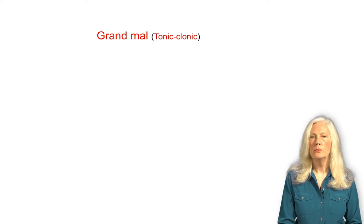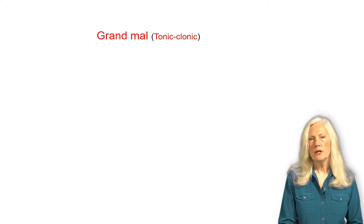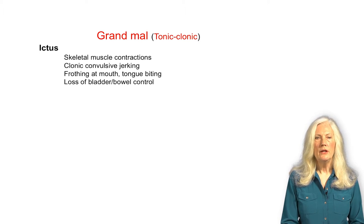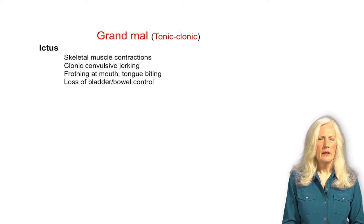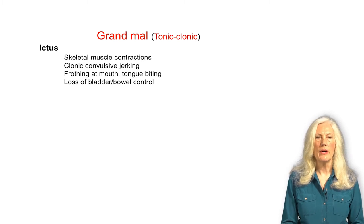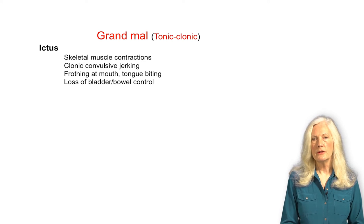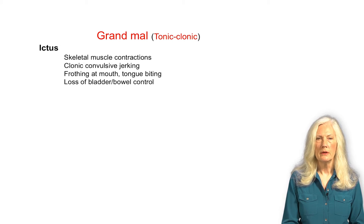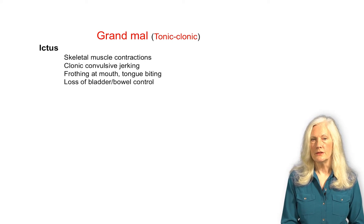The type of seizure you'll see most often is generally a grand mal seizure. The seizure itself is referred to as an ictal phase or ictus. It usually involves strong tonic contractions of skeletal muscles, jerking, uncoordinated large motor activity, and a loss of consciousness. There's usually biting of the tongue and frothing at the mouth. It can cause loss of bladder or bowel control, reflecting an autonomic component. But the seizure itself, or the ictus, is just one part of the whole episode.